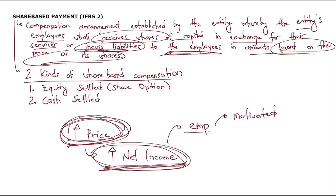In cash-settled share-based compensation, the entity incurs a liability for services received, and that liability is based on the entity's equity instrument — specifically, the price of shares. The most common example here is share appreciation rights.